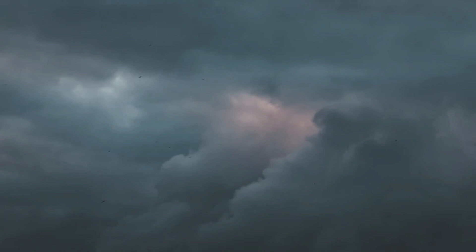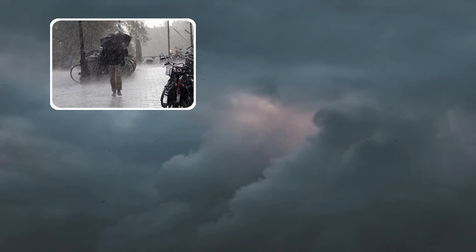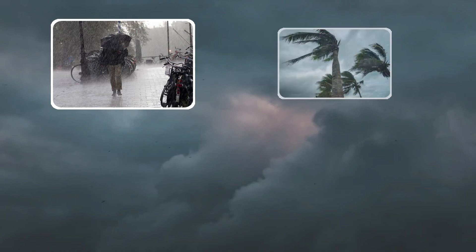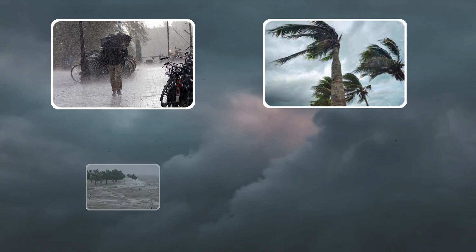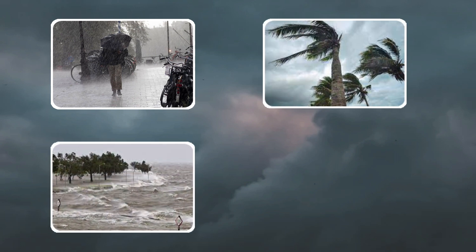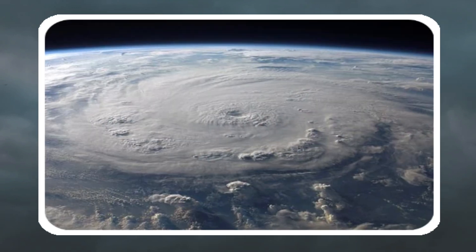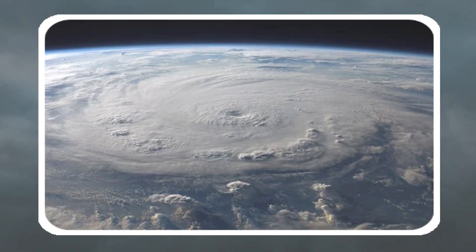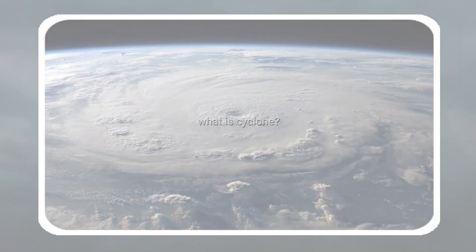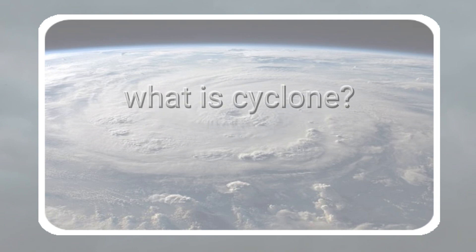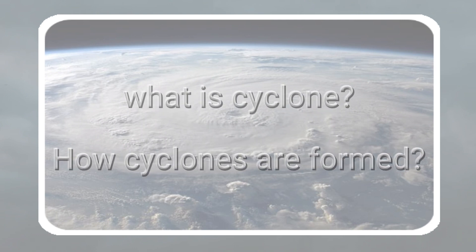Let us talk about a natural disaster which causes heavy rain, strong wind, large storm surges near landfall and tornadoes. Yes, it's nothing but cyclone. In this video, we are going to see what is cyclone and how they are formed.